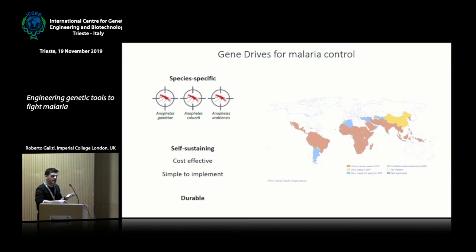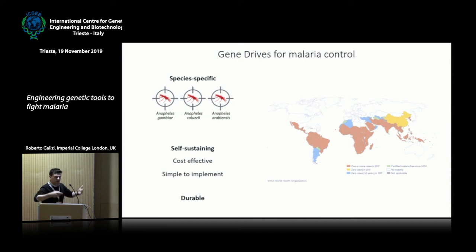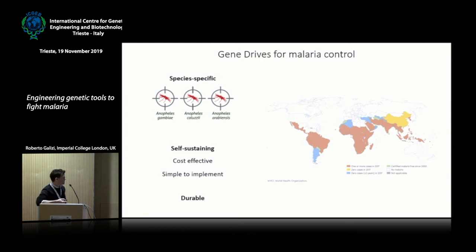Gene drive elements have features that make them attractive: they have to be species-specific — we're targeting mainly three species. They have to be self-sustaining, so we release only a few mosquitoes and they do the job, spreading in the population. That makes them cost-effective — we don't need to build huge facilities in many areas, so they're simple to implement. The idea is that they are durable enough to decrease the number of mosquitoes below the threshold necessary for disease transmission, and therefore help in eradicating malaria. They are also complementary to other interventions — you can use these genetic control tools together with existing tools like bed nets.